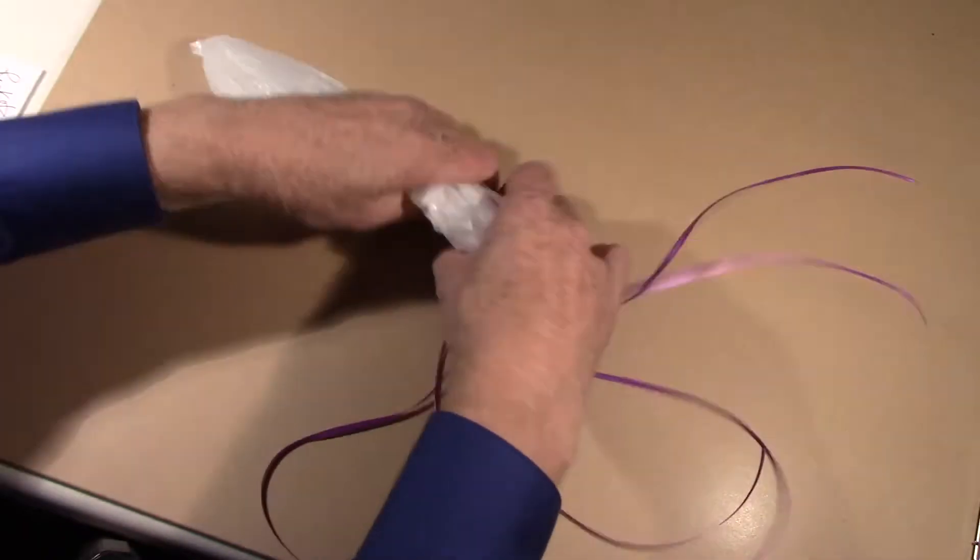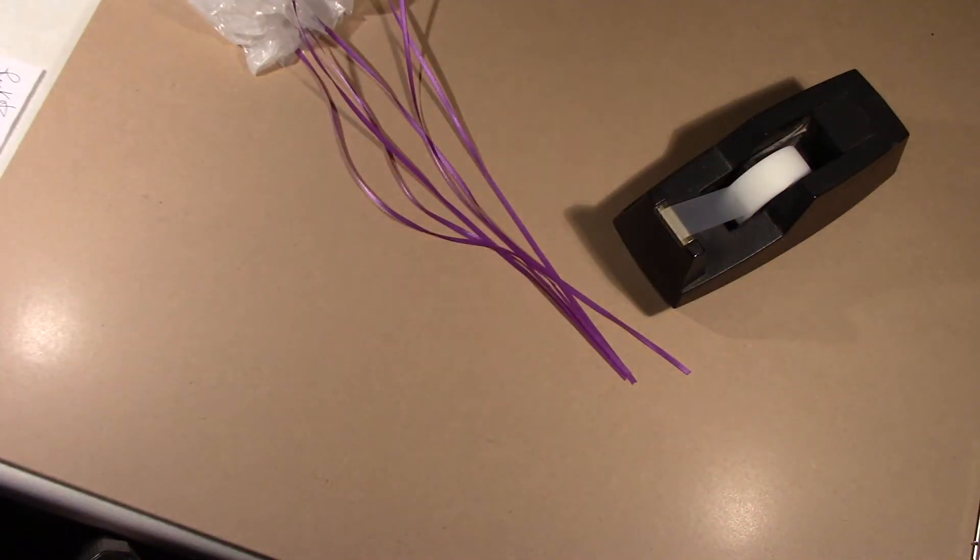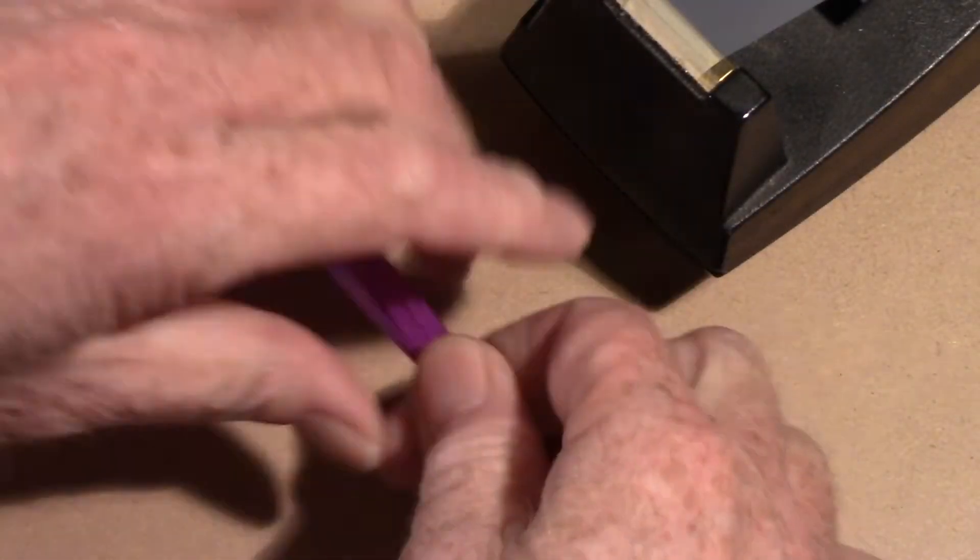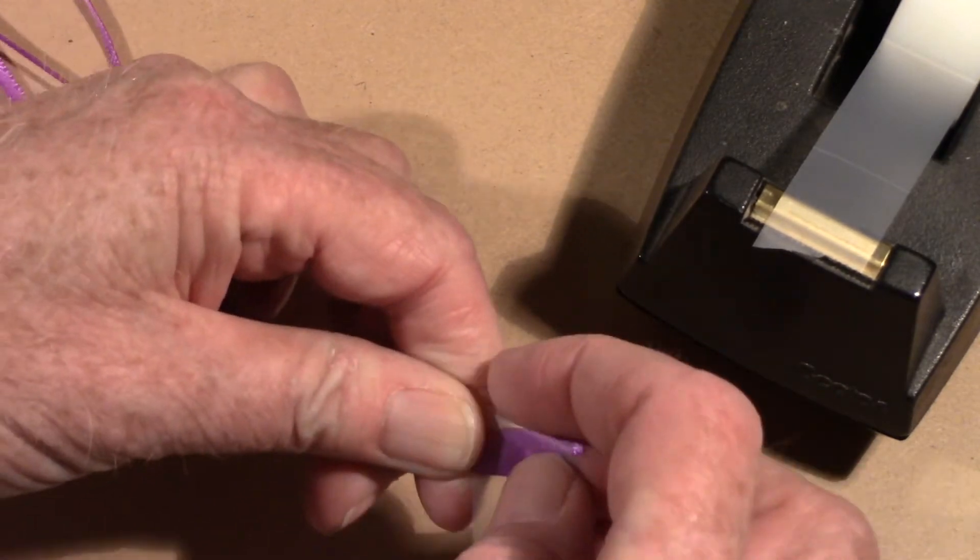Now when you turn it right side up, it kind of looks like a jellyfish, doesn't it? Now what I want you to do is straighten it out, and now we're going to tape the ends together. Put all the ends together, one end, make sure they're even, take a piece of tape and wrap it around the end.